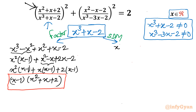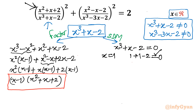Method 2: Synthetic Division Method (SDM). For x³ + x - 2 = 0, by the rational root theorem putting x = 1: 1 + 1 - 2 = 0, so x = 1 is a root. I write all the coefficients of the cubic: 1, 0, 1, -2, and apply synthetic division.